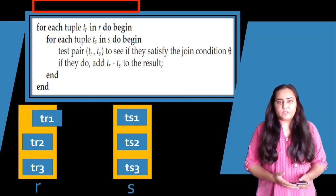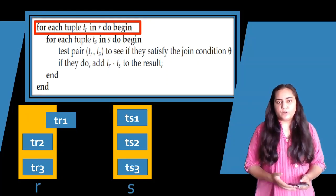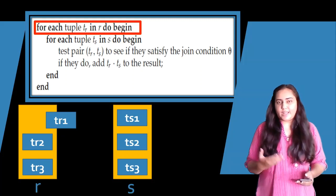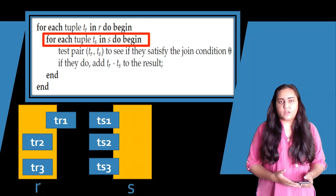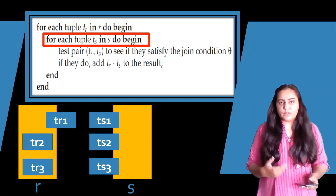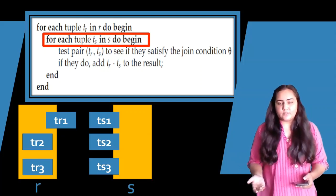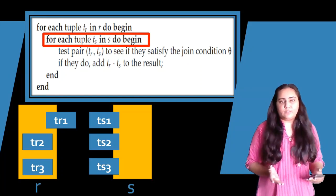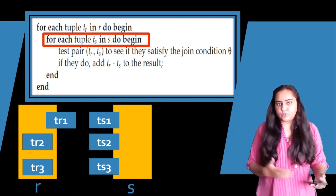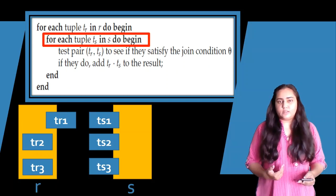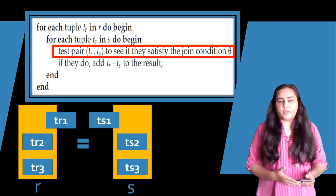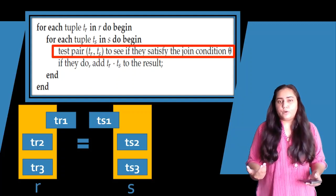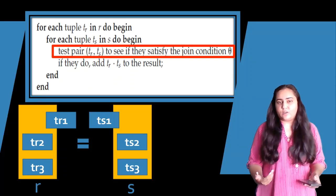The first line of the algorithm says: for each tuple TR in R, do begin. So we pick tuple TR1 from relation R. The next line says: for each tuple TS in S, do begin — meaning we pick one tuple at a time from relation S. We match all three tuples of S with TR1, because it's a nested for loop. The next line checks if they satisfy the join condition theta.